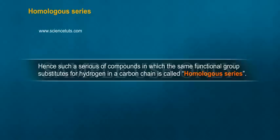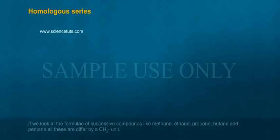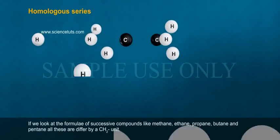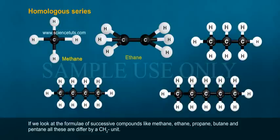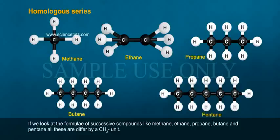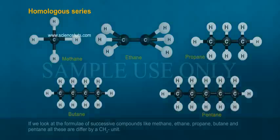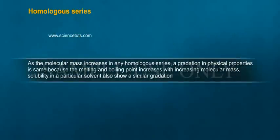If we look at the formulae of successive compounds — like methane, ethane, propane, butane, and pentane — all of these differ by a CH₂ unit as the molecular mass increases.